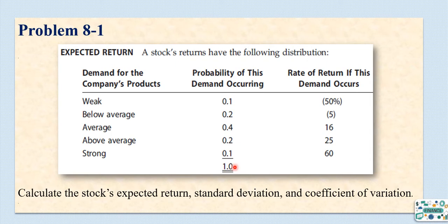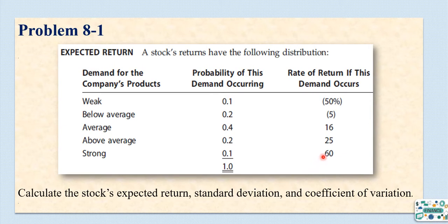The rate of return under each scenario is given as well. For example, if the demand for the company's product was weak, you will lose 50% of your capital — that is minus 50%. On the other extreme, if the demand was strong, you will gain 60%. The question is to calculate: first, the expected return for the stock; second, the standard deviation of the stock; and the coefficient of variation of the stock.